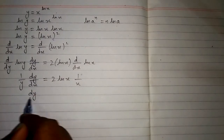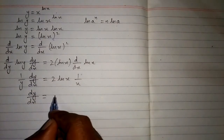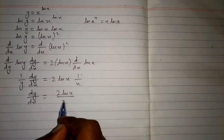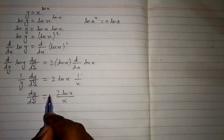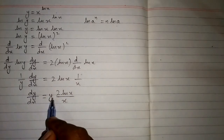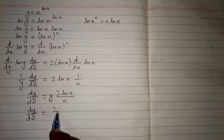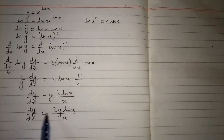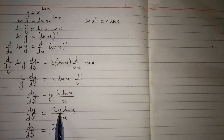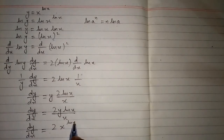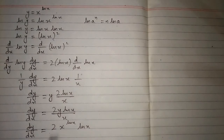This can be written as dy by dx is equal to 2 ln x upon x, and we multiply both sides by y. So dy by dx is equal to 2 times y times ln x upon x. Now we substitute the value of y, which is x to the power ln x, giving us dy by dx is equal to 2 times x to the power ln x times ln x upon x. This is the required derivative.